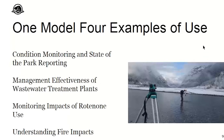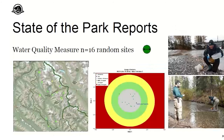I want to talk about how we're using one model in four different ways: the condition monitoring program in the State of the Park Report, looking at wastewater treatment plants, the rotenone project, and understanding fire impacts. The CEO wanted to sit at his desk, drill down to, say, Yoho National Park, see that there's a green ball meaning water quality is good and stable — and that's what you're seeing on the left-hand side. This is the result of the 2018 field campaign.